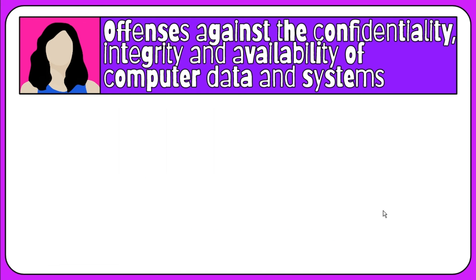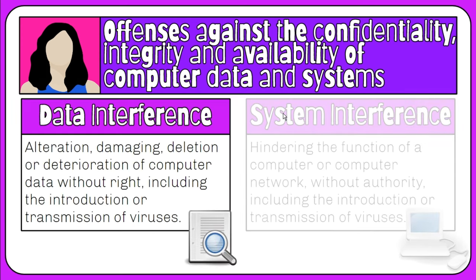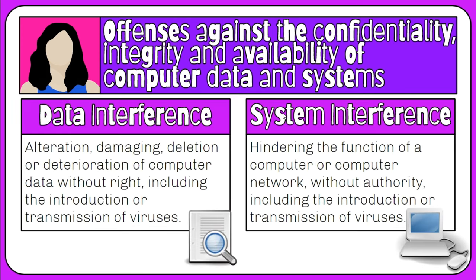There is also data interference and system interference. Data interference is the alteration, damaging, deletion, or deterioration of computer data without right, including the introduction or transmission of viruses. On the other hand, system interference is the hindering of the function of a computer or computer network without authority, including the introduction or transmission of viruses.